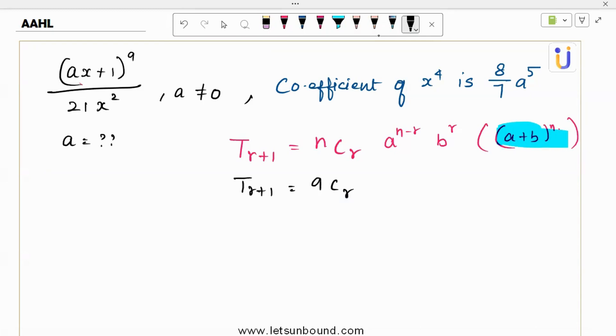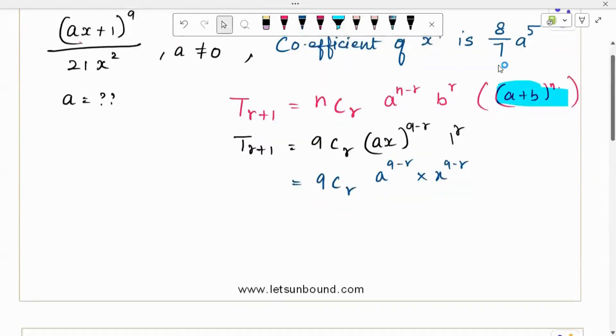9Cr, a is actually first term is ax. So there is the whole power n minus r which is 9 minus r and b power r. b is 1, 1 power r doesn't matter, 1 power anything is 1. So 9Cr, a is just a number, a power 9 minus r times x power 9 minus r. This is the simplification I can do.